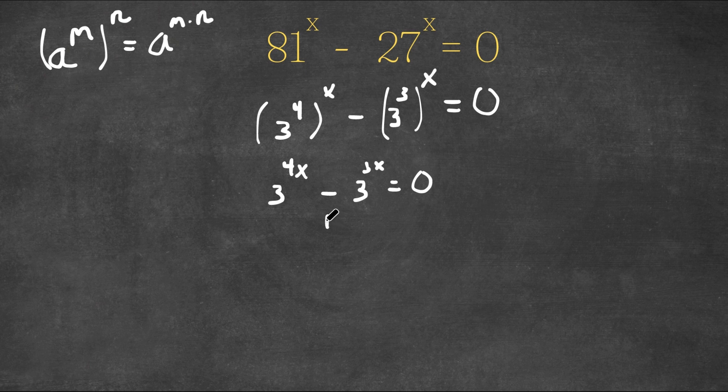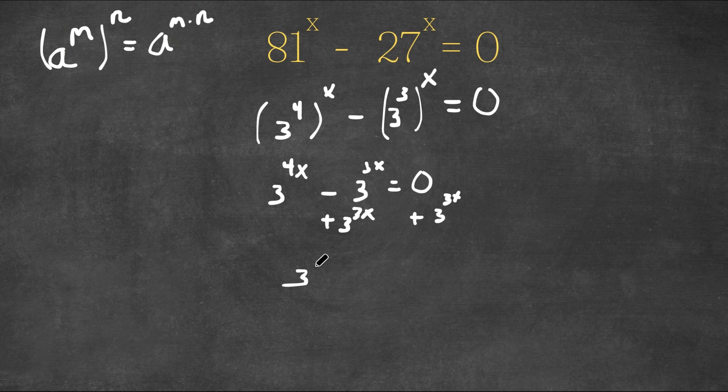Now I'm actually going to add 3 to the power of 3x on both sides. So now we get 3 to the power of 4x, these two cancel out, equals 3 to the power of 3x.